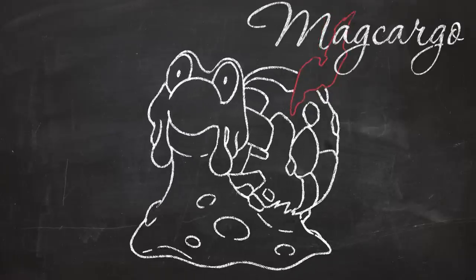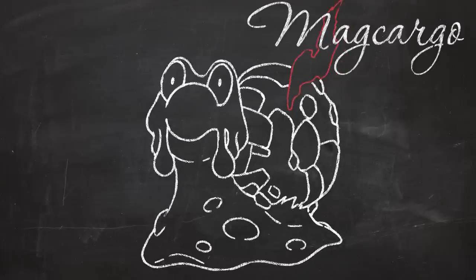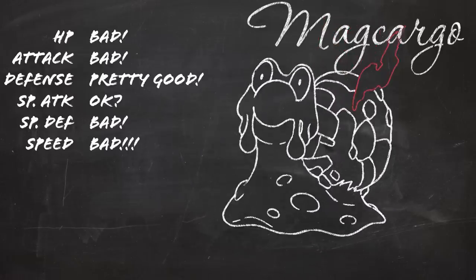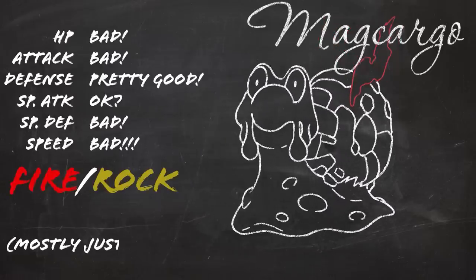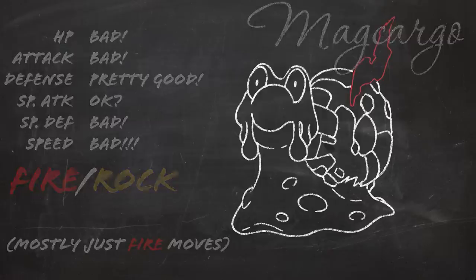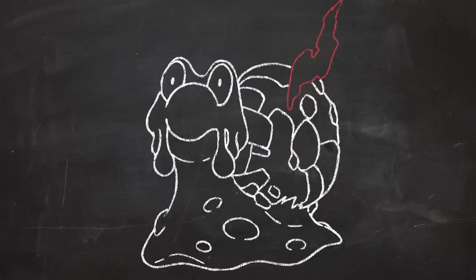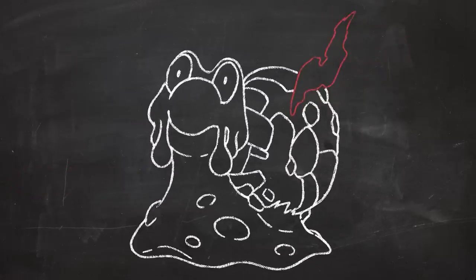It's hard to overstate how bad Magcargo is. There's almost nothing relevant it can do that dozens of other Pokemon can't do better. It has awful stats, an awful typing, a barren movepool. To make Mag work, I'd need to get creative, and most importantly, I'd need to accept the fact that I could not rely on him solely to carry games by himself.